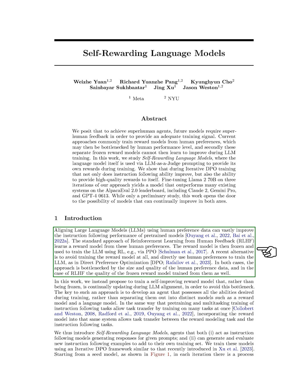We're going to talk about how we can enhance the performance of large language models, LLMs, by aligning them with human preference data. The typical method, known as reinforcement learning from human feedback, RLHF, involves learning a reward model from human preferences. This reward model is then used to train the LLM. However, a recent alternative approach skips the reward model training and directly uses human preferences to train the LLM, a method known as Direct Preference Optimization, DPO.